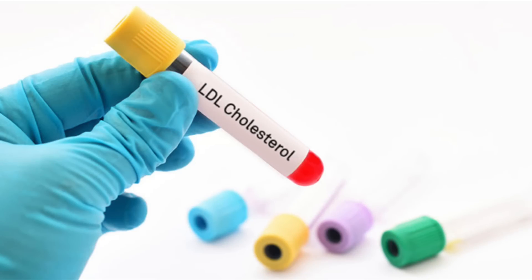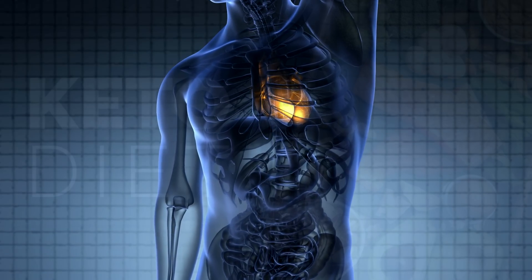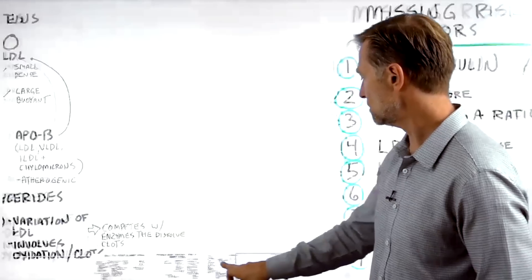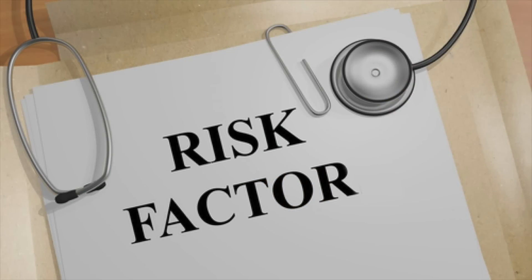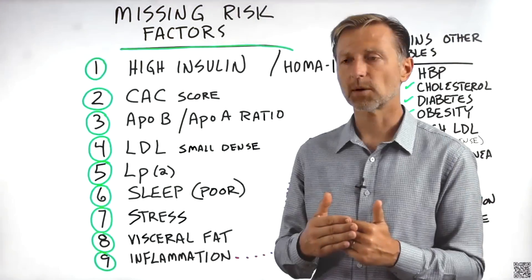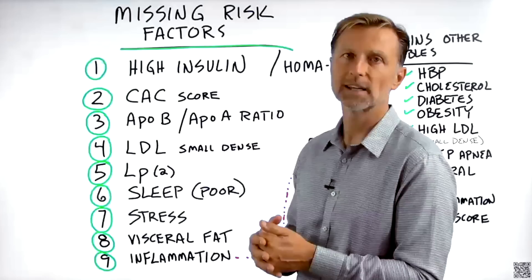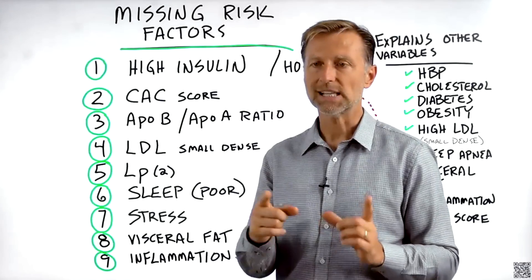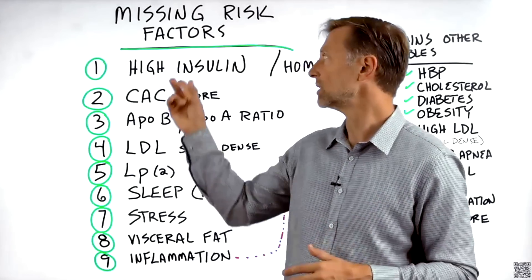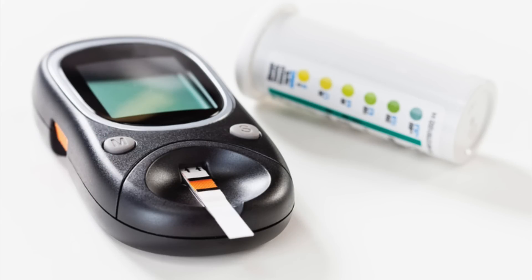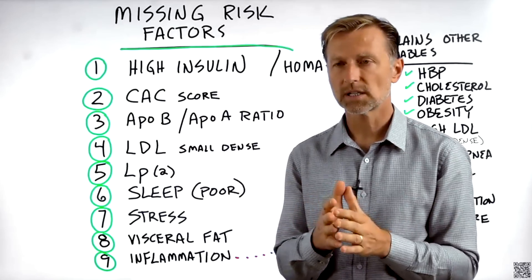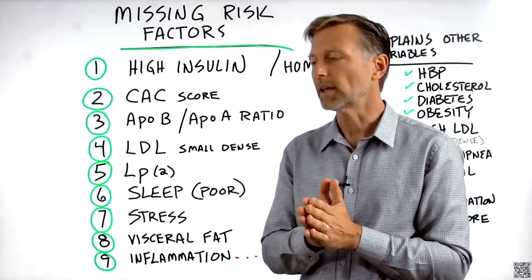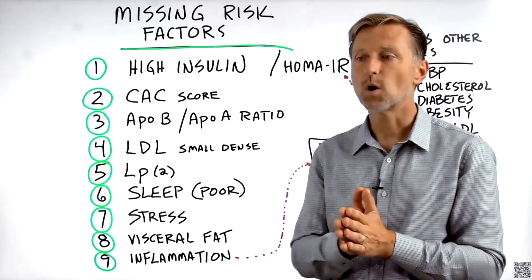Total LDL cholesterol is not a good indication to tell you what's going on in the heart, especially if you're on the ketogenic diet. Now let's go into these additional missing risk factors. The number one best risk factor — I would even go so far to say it's probably the causation of heart problems — is high insulin, called hyperinsulinemia. You can also do a test to see how much insulin resistance you have, called the HOMA-IR test, which is a really good test to measure insulin resistance. Why is high insulin so significant as a risk factor? Because it explains most all other risk factors.